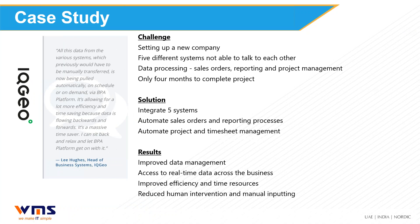IQ Geo is a technology company in the UK. They had set up a new company but had five systems that didn't talk to each other, causing significant issues with data processing — sales orders, project management reporting. They wanted to automate the sales orders and reporting process. They didn't quantify exact hours saved, but their data management became much better and they had access to data across the whole business — a 360-degree view using SAP Business One as the source of truth.